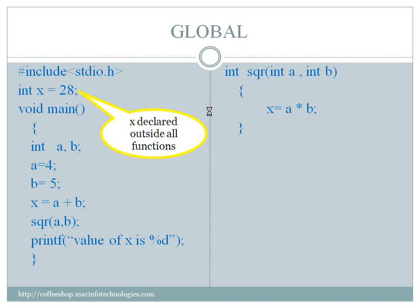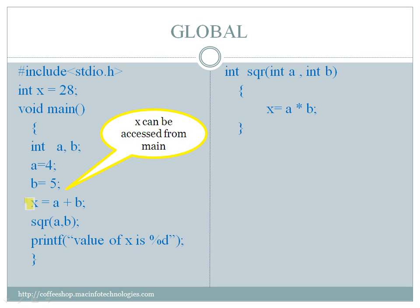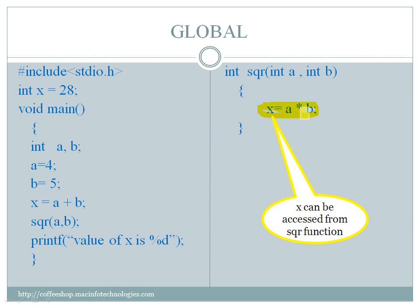Here we have declared a variable 'x' of type int. This variable is accessible by all the functions. You can see we are using the same x variable in the main function — we are not declaring x inside main. We can use x in any function; again we are using the same x here in the sqr function.